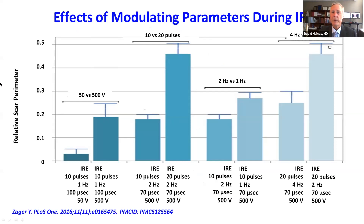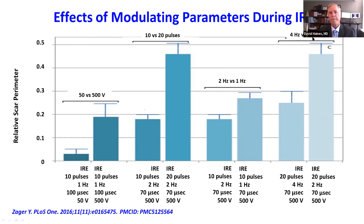What other parameters can you modulate? In a cellular preparation experiment looking at various parameters: a 500-volt field had more effect than 50 volts — not surprising. Twenty pulses had more effect than 10. Interestingly, when pulses were delivered at two hertz versus one hertz, or four hertz versus two hertz, spreading the pulses out over a longer duration had more effect, whereas squeezing them all into a shorter duration was less effective.